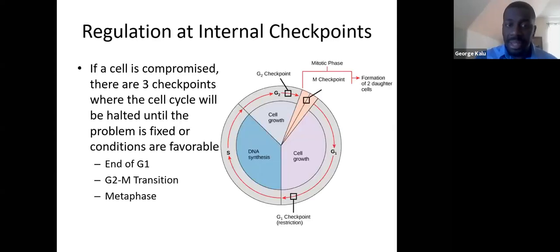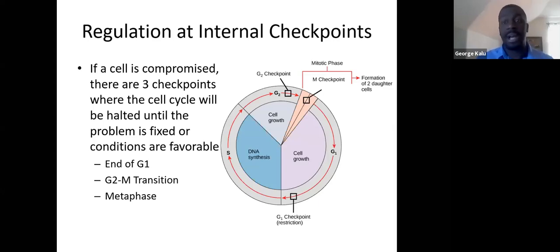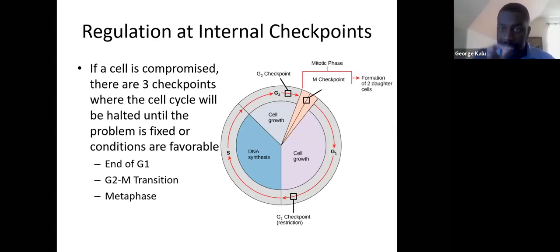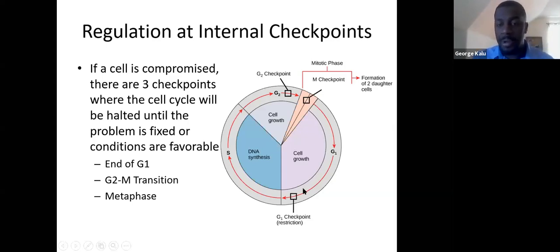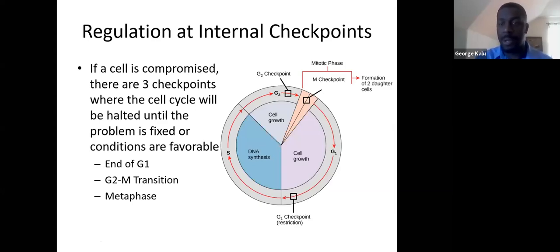There are three checkpoints during the cell cycle where the cell can assess what's going on. If everything's okay, it runs through; if there's a problem, it stops, fixes the issue, then moves on. The three checkpoints are the G1 checkpoint at the end of G1 phase, a checkpoint at the end of G2 phase, and a third checkpoint during metaphase.